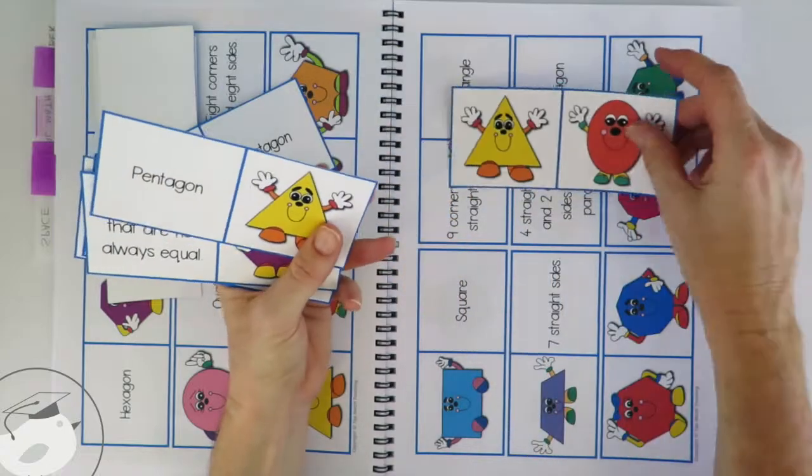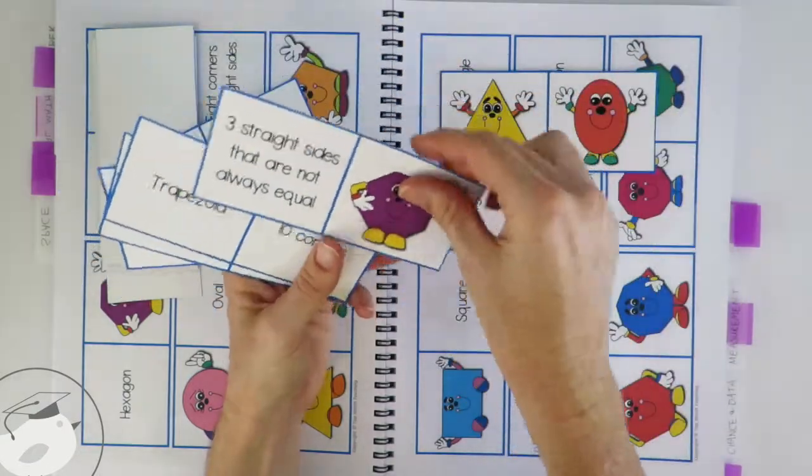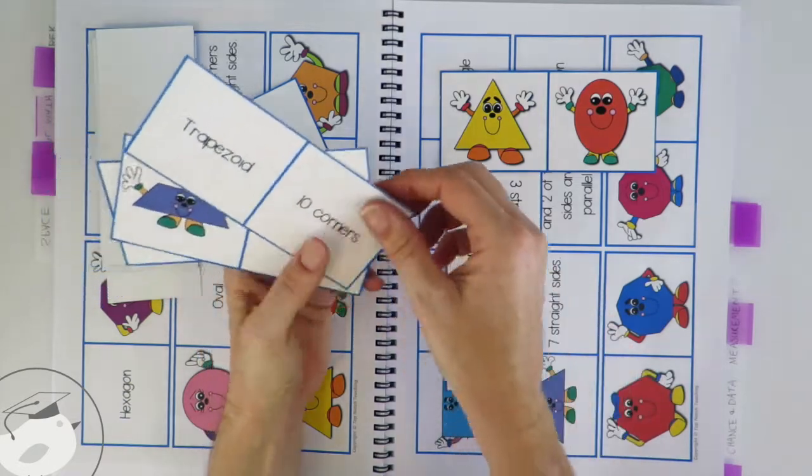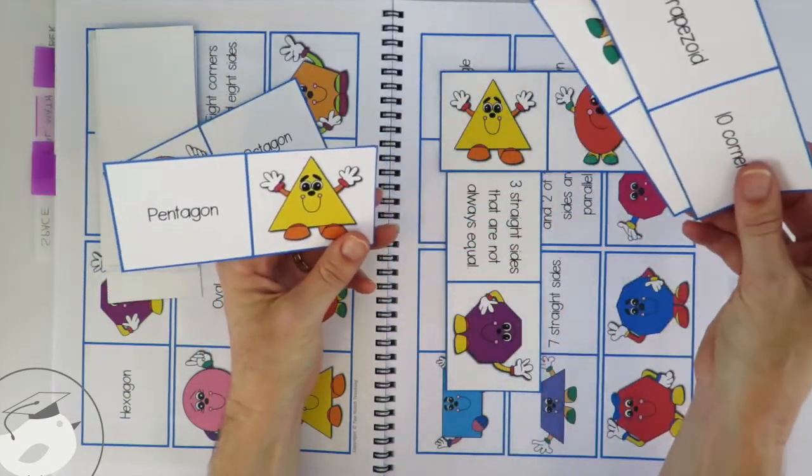So let me just show you. I'm going to pop this one down and I've got a triangle so I can do this, three straight sides that are not always equal. And what else have I got there? Oh, I've got another triangle.